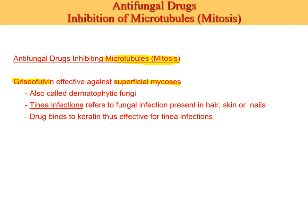Superficial mycoses infect structures at the surface that are not part of living tissue — things like hair, skin, or nails. These infections are called tinea infections in general. Griseofulvin is effective because it binds to keratin, a normal fibrous protein found in hair, skin, and nails. These superficial fungal organisms feed off keratin and are sensitive to griseofulvin, which binds to that keratin when you're taking the drug.